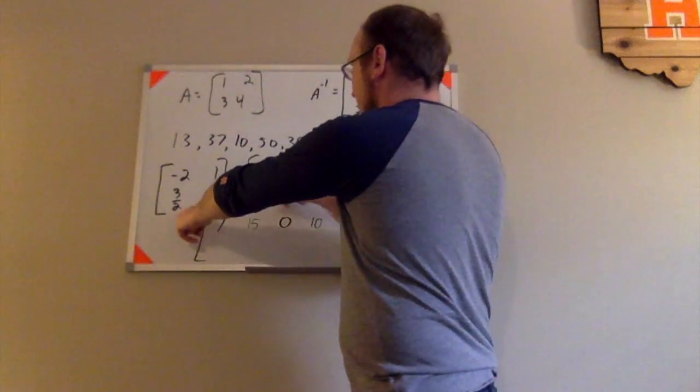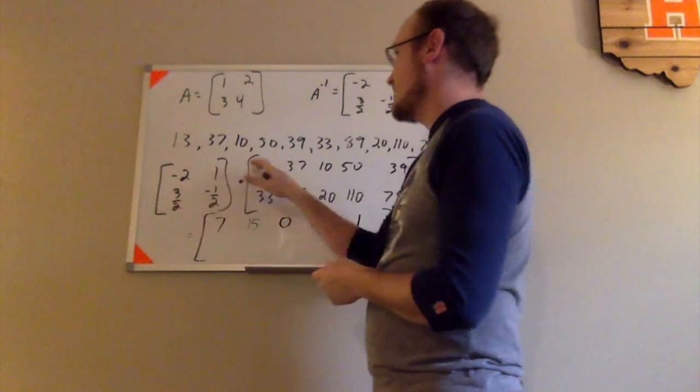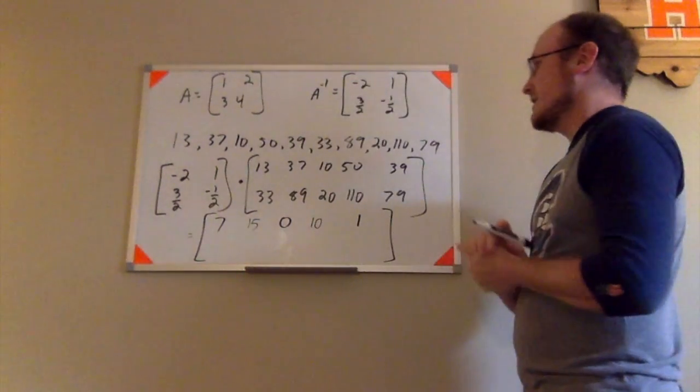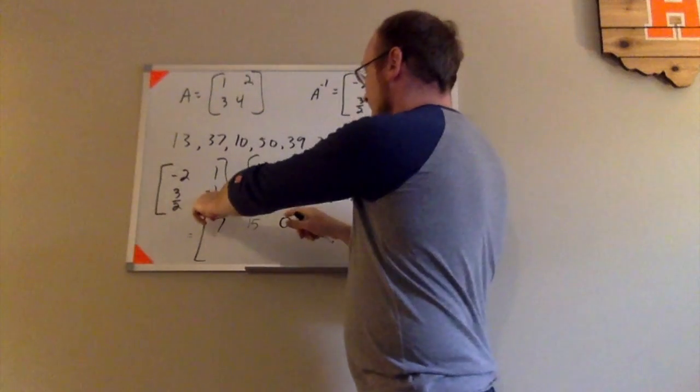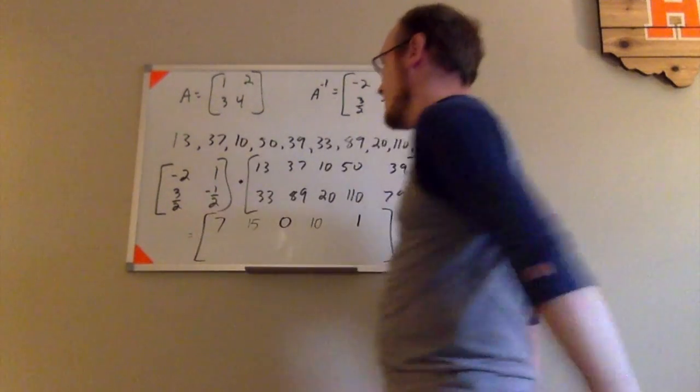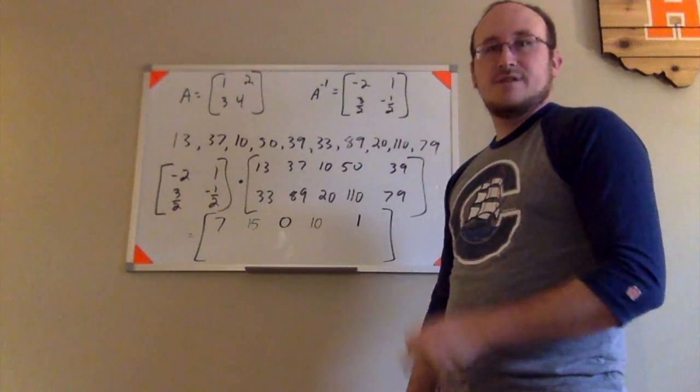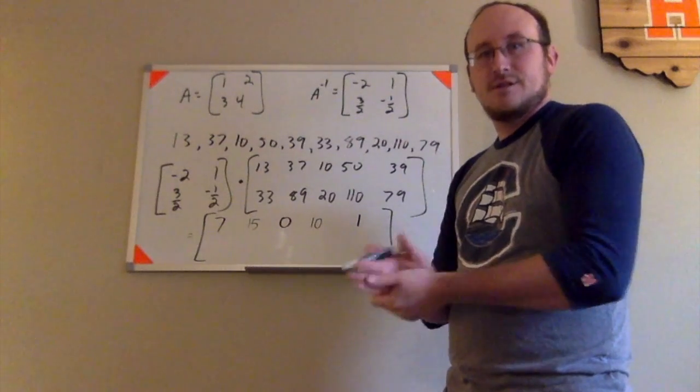first column. So I have 3 halves times 13. 3 halves times 13. I go by the top number times the 13. So that would be 39 halves. And then negative 1 half times 33 would be negative 33 halves. 39 halves and negative 33 halves makes 6 halves. 6 over 2 is 3.